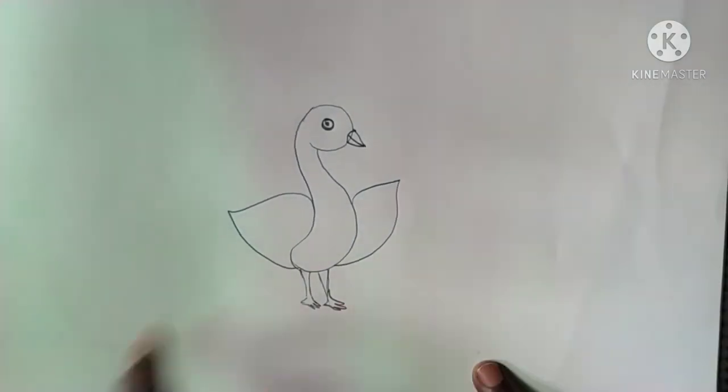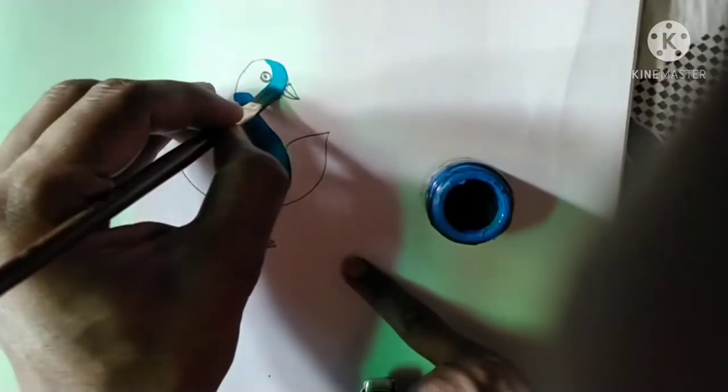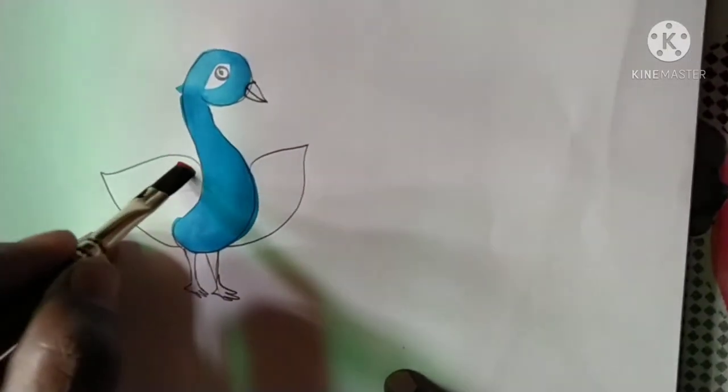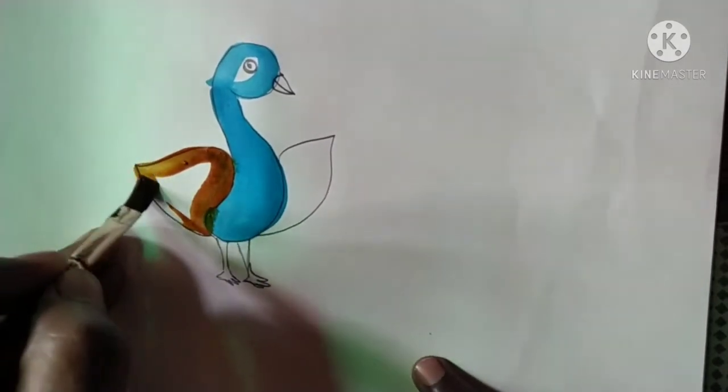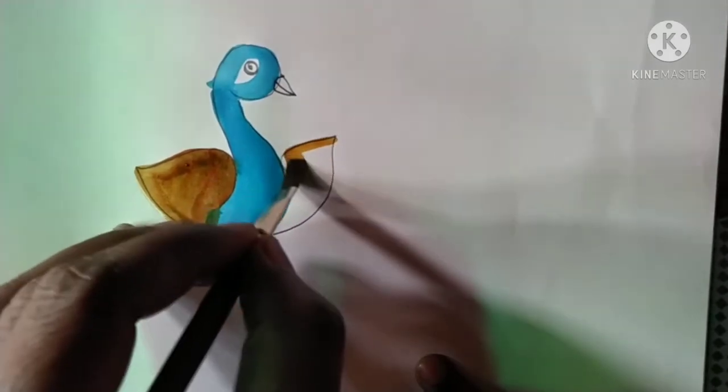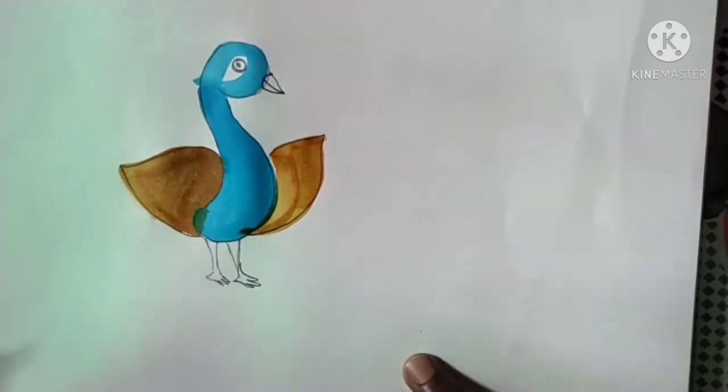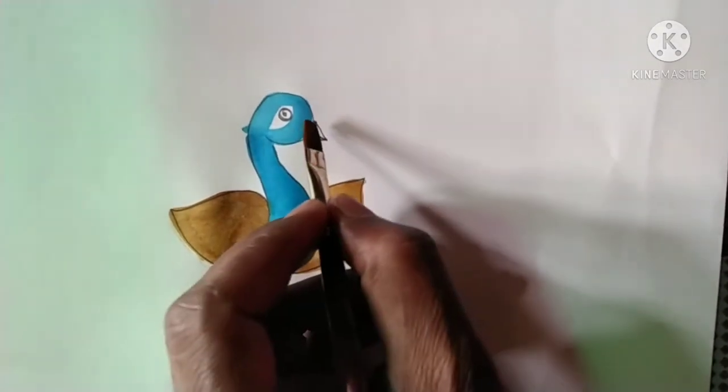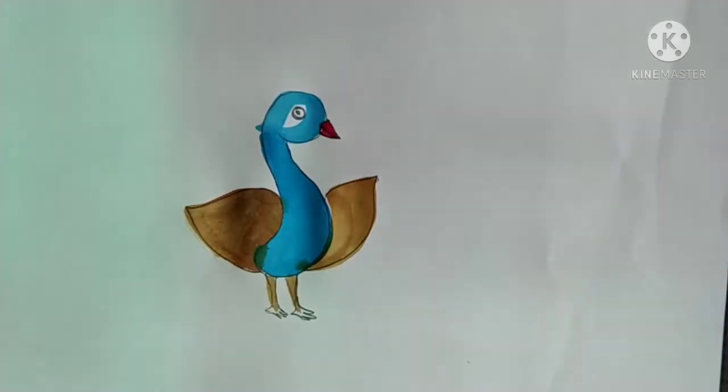And then we fill the color with the glitter. Then we draw the, fill the color with the feather of the peacock. See. And then we take the red color and fill the beak. Like this.